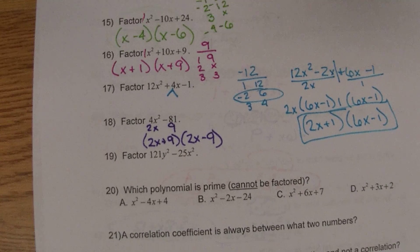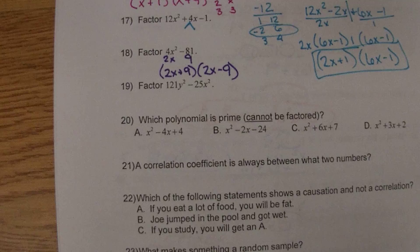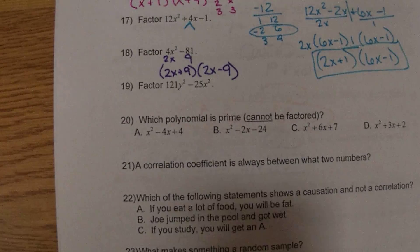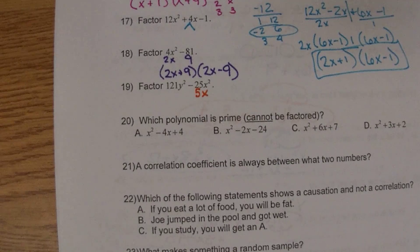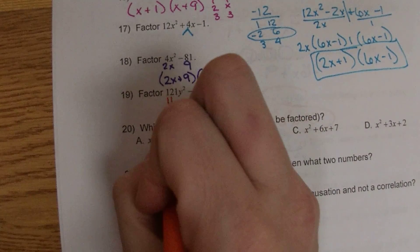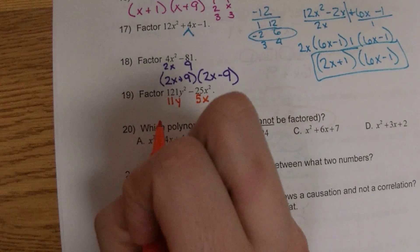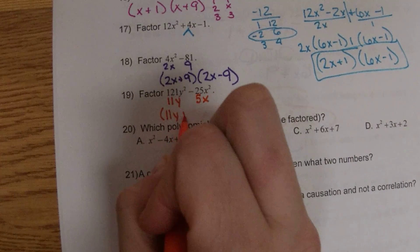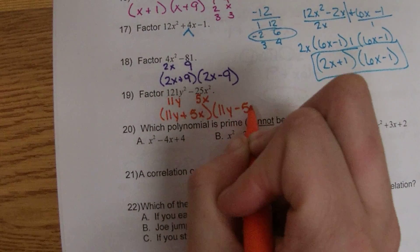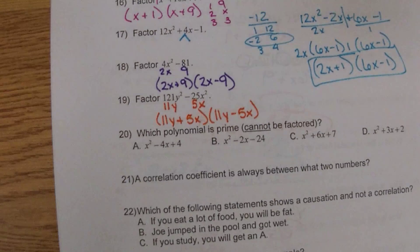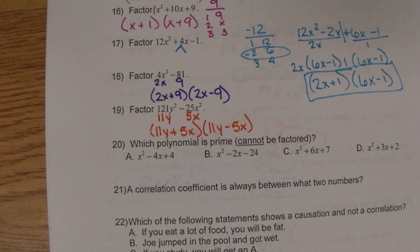Number 19 is also a special case. So 5 times 5 is 25. Half the exponent is x. 11 times 11 is 121 with a y. So we'll have 11y plus 5x and 11y minus 5x. Remember, it doesn't matter whether you put the subtraction or addition first or second. You just need both of them.